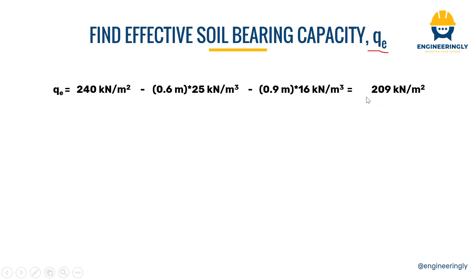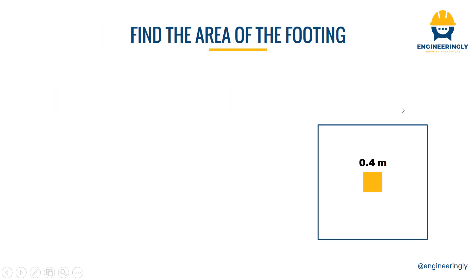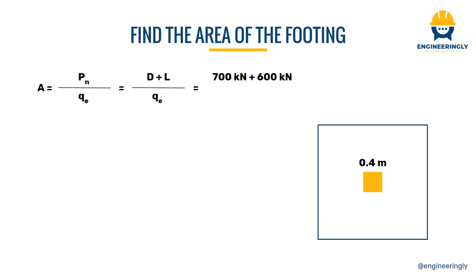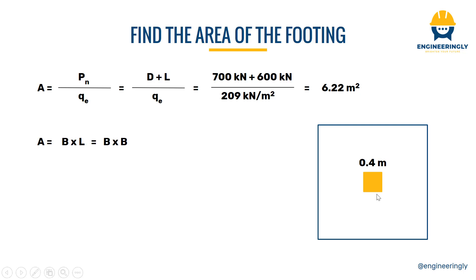Once the effective bearing capacity is obtained, we calculate the required footing area. The formula is the unfactored load divided by the effective soil bearing capacity: (700 + 600) kN divided by 209 kN/m² equals 6.22 m². Since it is a square footing, the area equals b squared. Solving gives b = 2.5 meters, so the footing will be 2.5 meters by 2.5 meters.